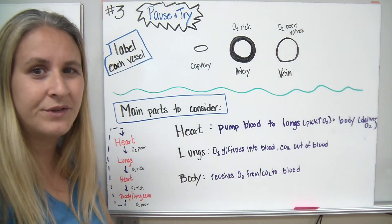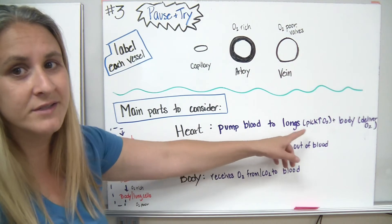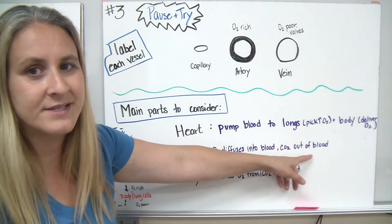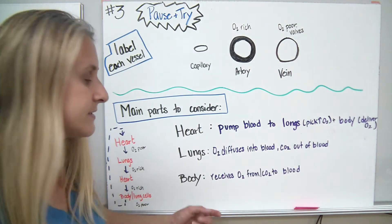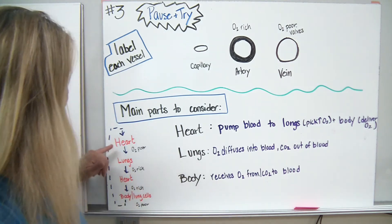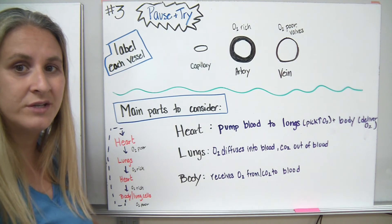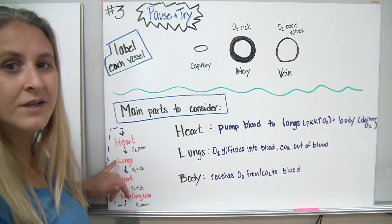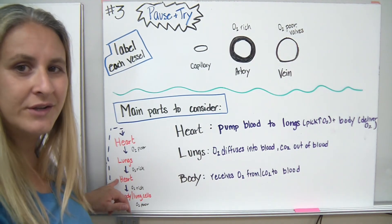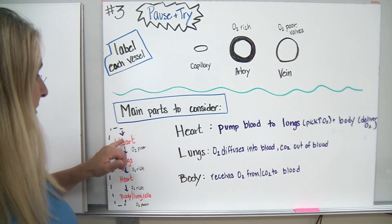There are three main players when thinking about blood getting pumped around the body: the heart, the lungs, and the body. The heart pumps blood to the lungs to pick up oxygen, then around the body to deliver it. The lungs are where oxygen diffuses into the blood and carbon dioxide diffuses out. The body receives oxygen through the blood and drops off carbon dioxide. Looking at the diagram: blood coming from the body is oxygen poor and gets pumped to the lungs, where it drops off carbon dioxide and picks up oxygen. That oxygenated blood heads back to the heart, which pumps it around the body, and eventually it returns to the heart to start the cycle over again.